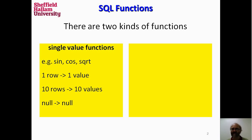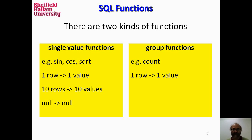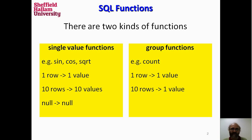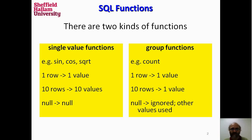And then there's a second kind of function, which is the group functions. Group functions like COUNT — one row produces one value, but group functions aggregate the values. If we have ten rows of data, we get one result: the number of rows, or the sum of all the values in a given column for all the rows. And in that, null values are ignored; the other values, where there are any, are the ones that are used.